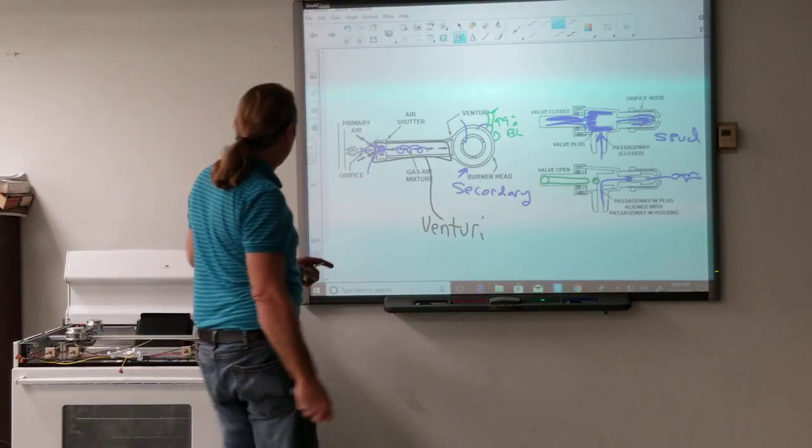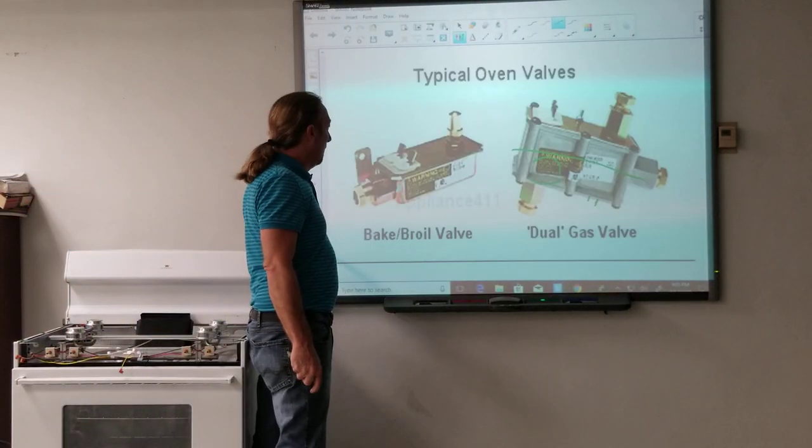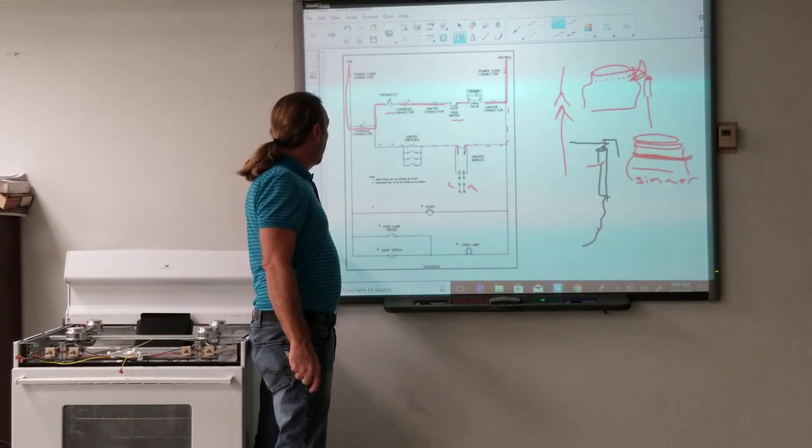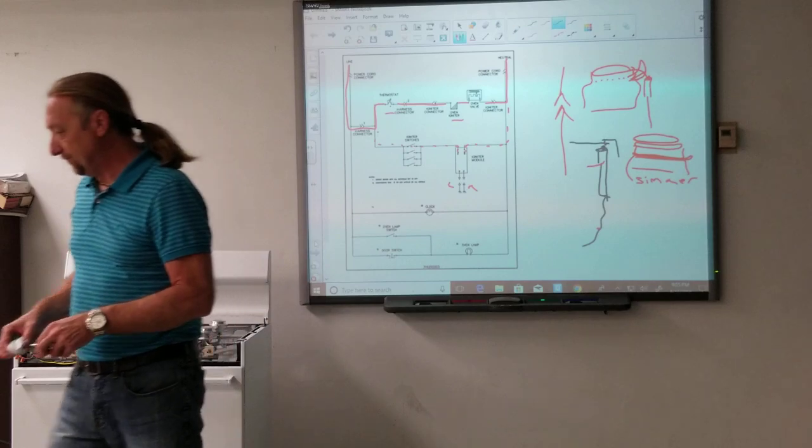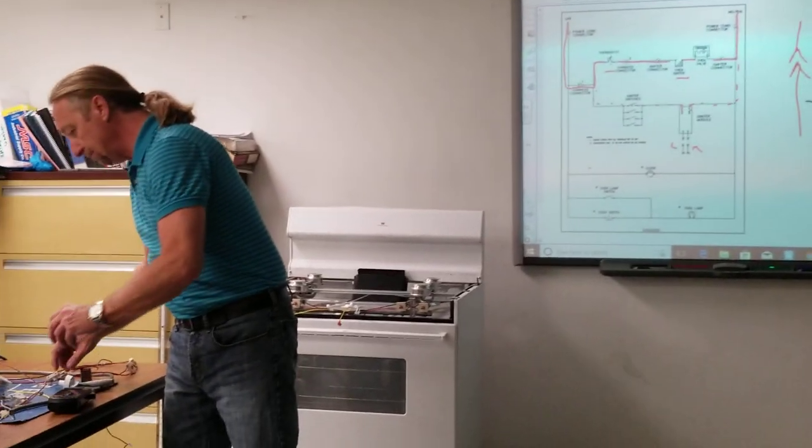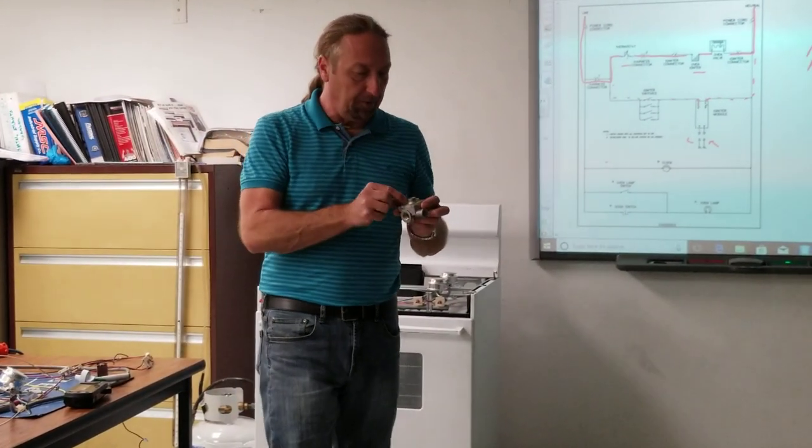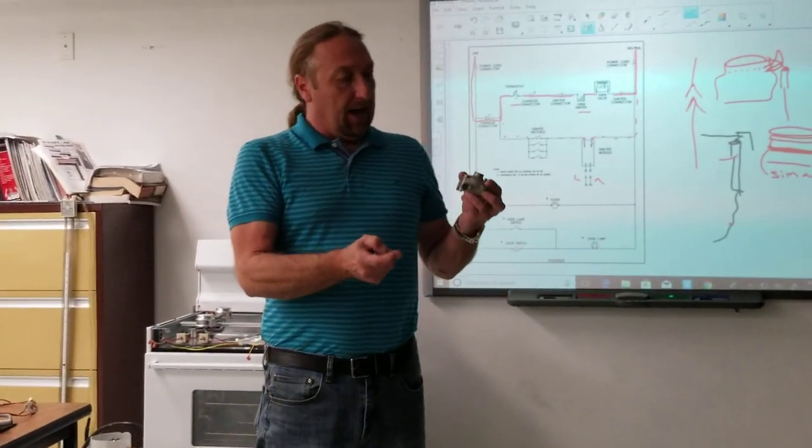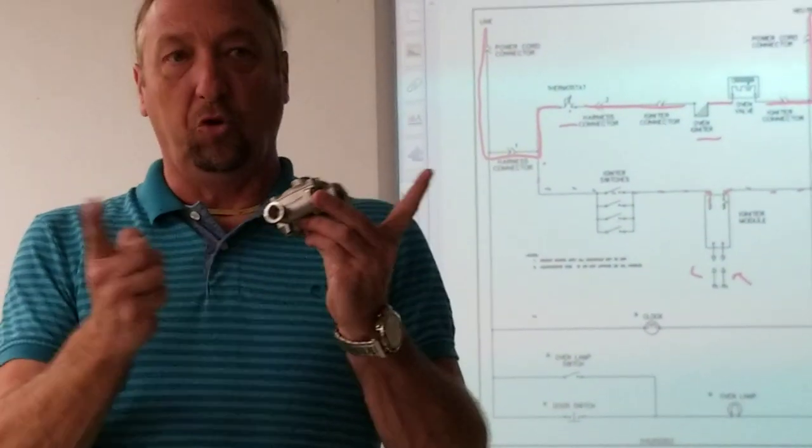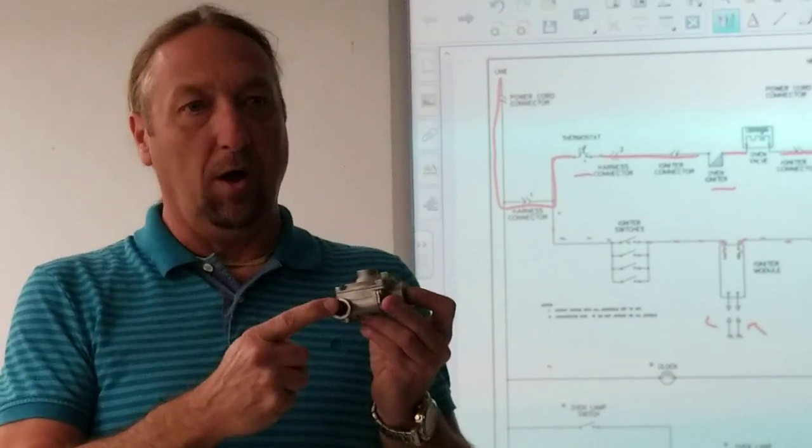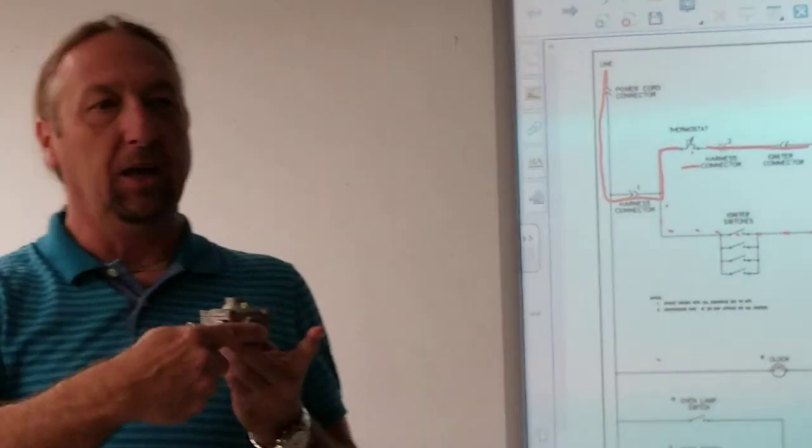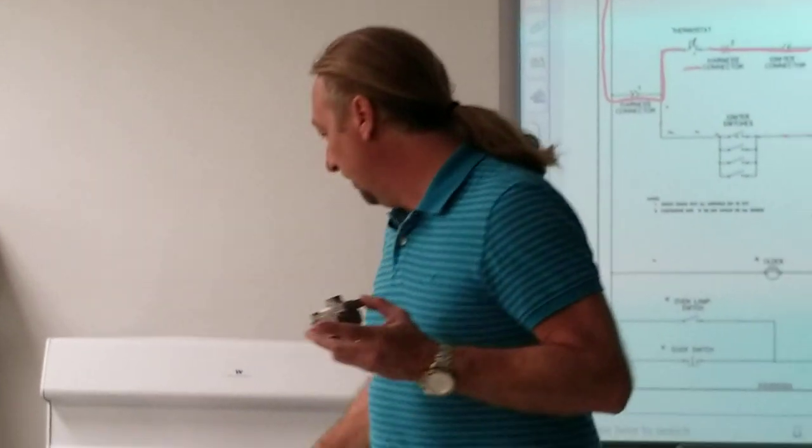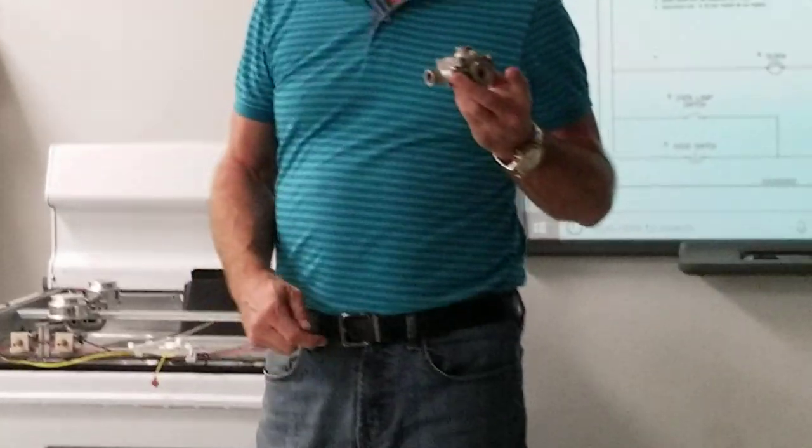Let's take a look at the regulator. I didn't get a picture of the regulator but I have one here. Gas comes in one side, it comes out two different openings on this regulator. One goes directly to the oven safety valve which we had on the table here, and the other one runs up top to the manifold here. This is where the burner cap is.